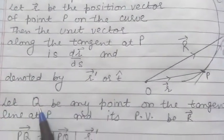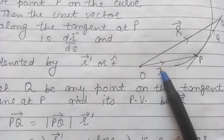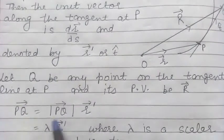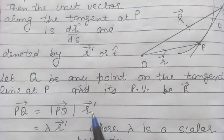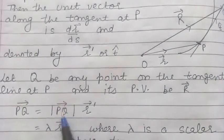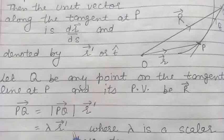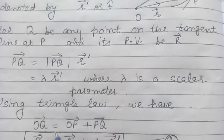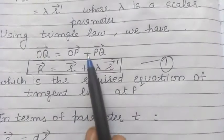In triangle OPQ, let us apply the triangle law. Vector PQ can be written as its magnitude times the unit tangent vector along PQ, which is vector R'. Taking the magnitude of vector PQ as the scalar λ, vector PQ can be written as λ times vector R'. By the triangle law of vector addition, vector OQ equals vector OP plus vector PQ.